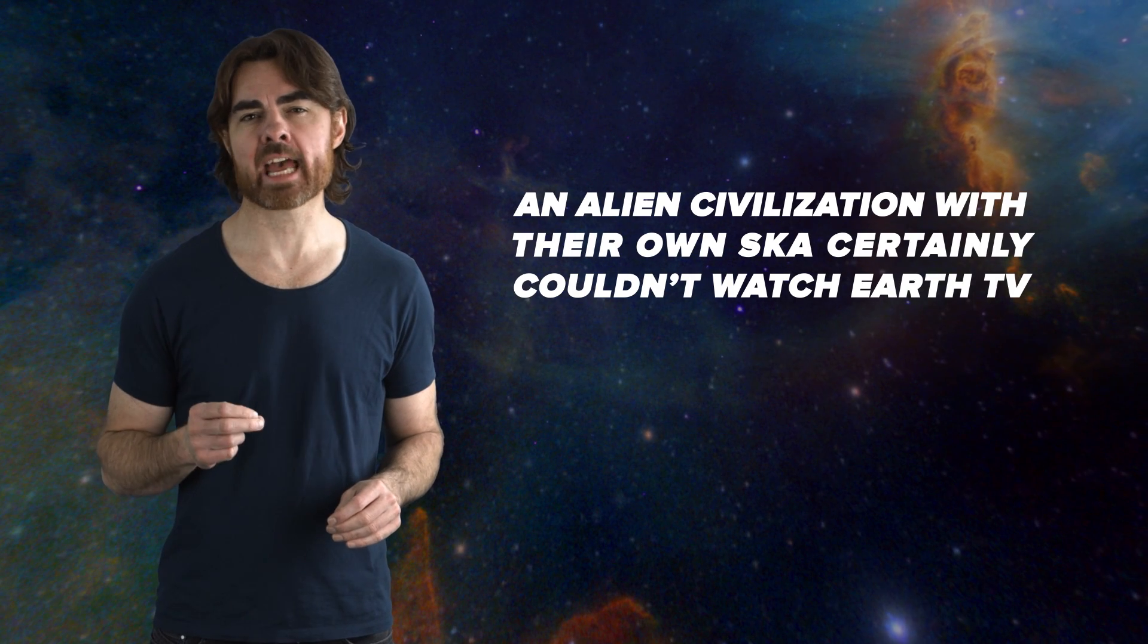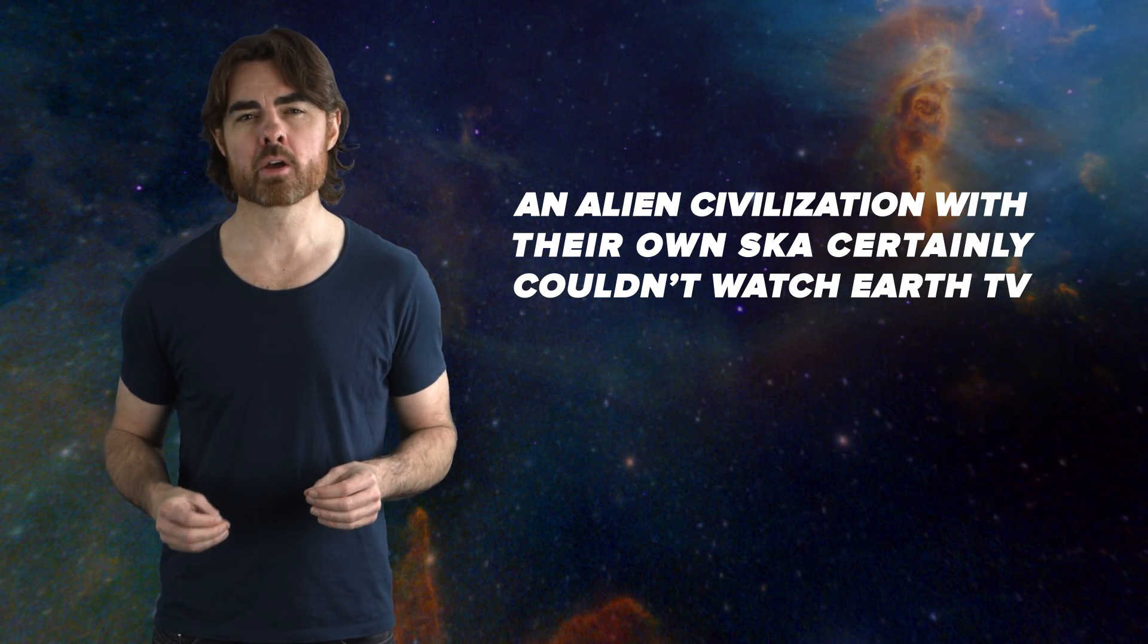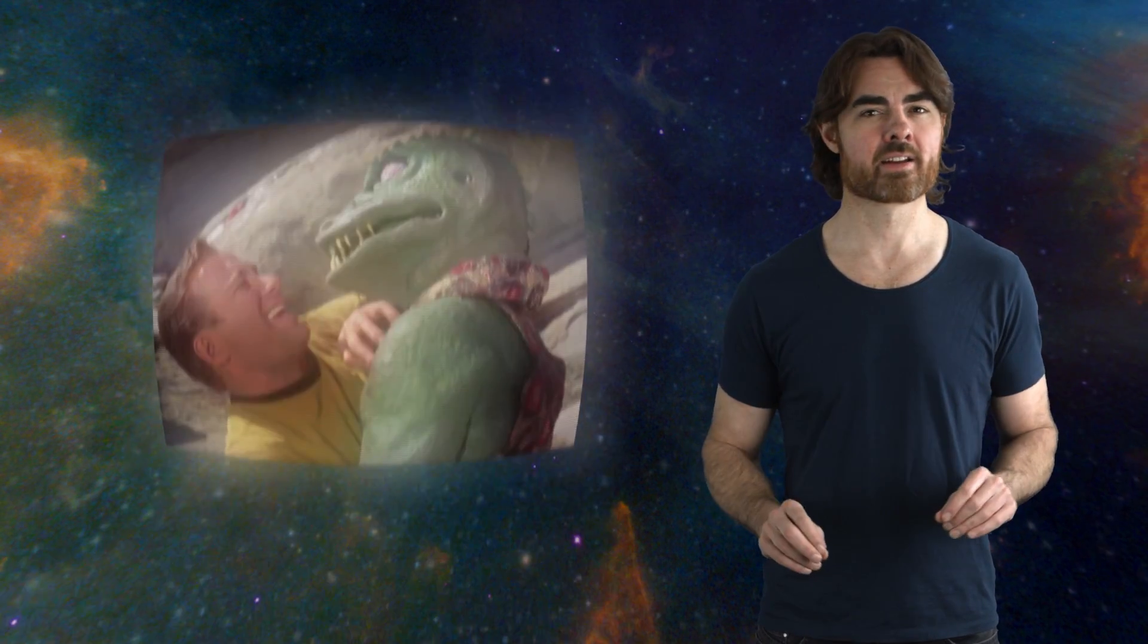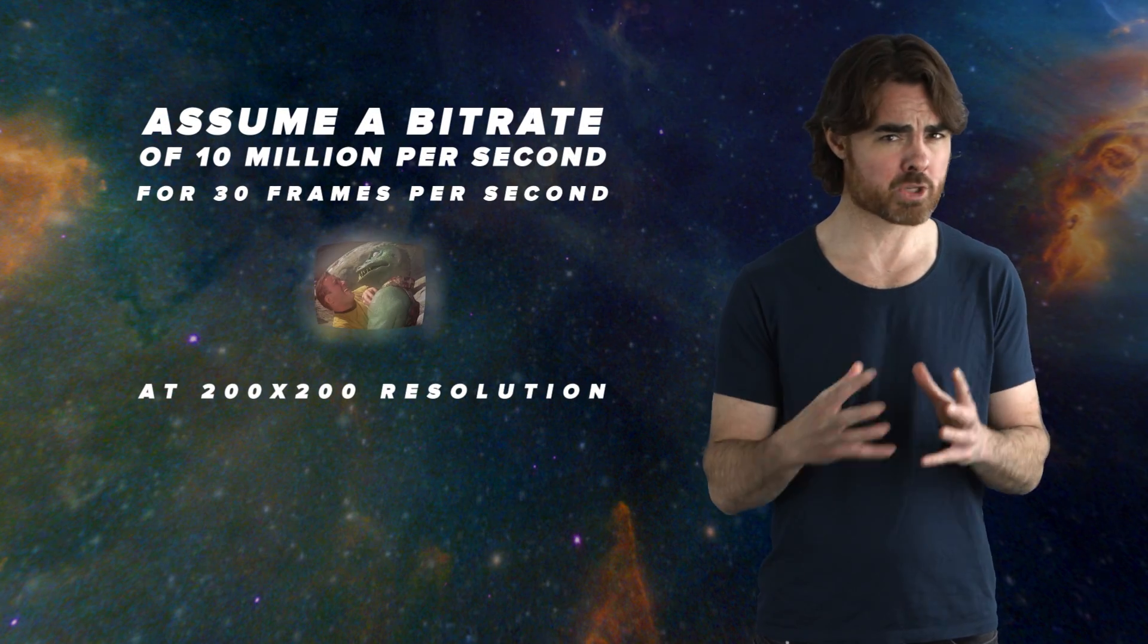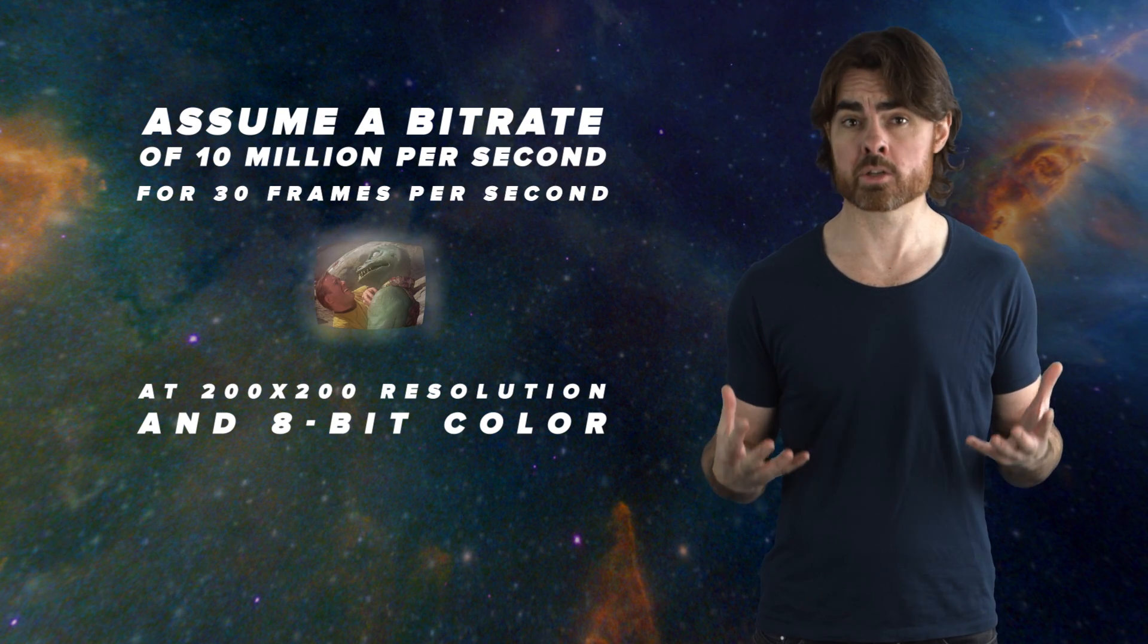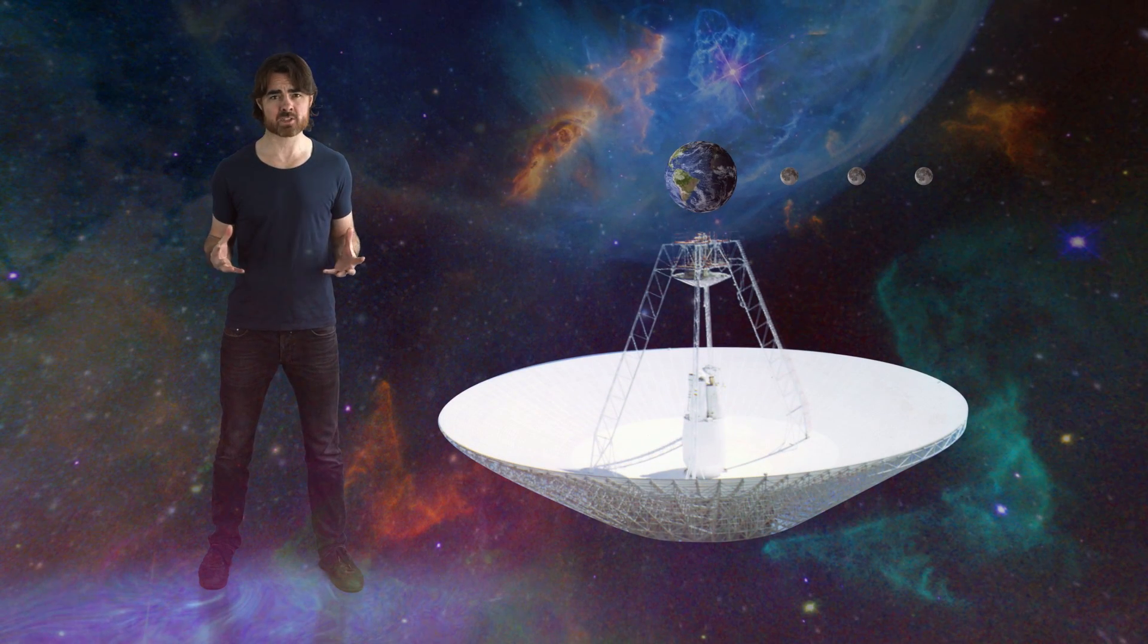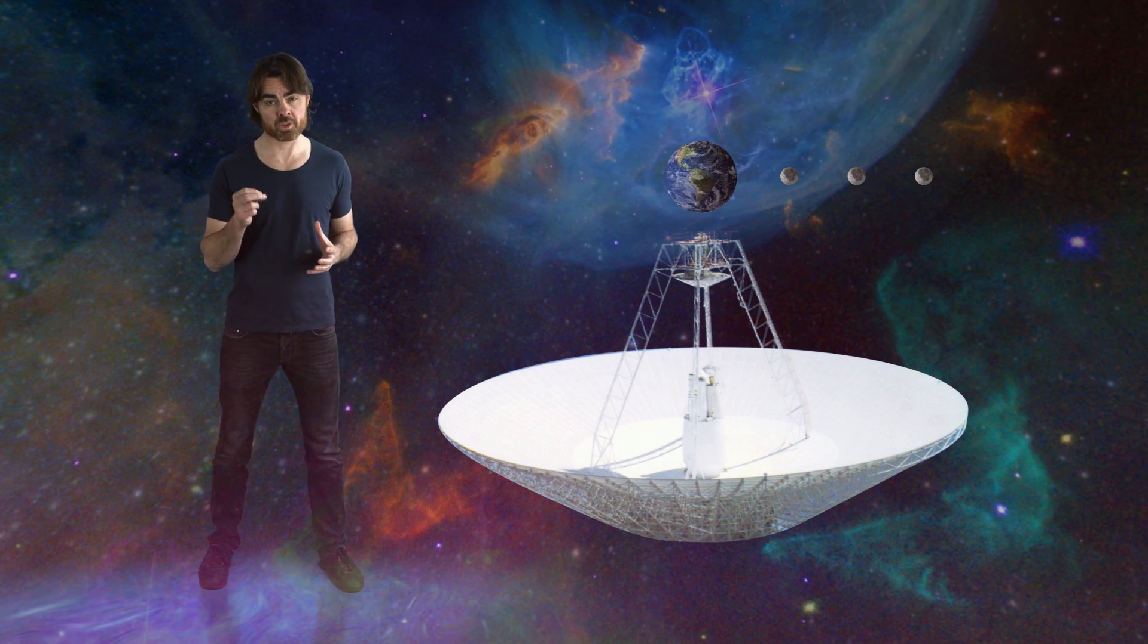To do that, they would need to achieve SKA's one month sensitivity in a tiny fraction of a second. That means compensating for the difference in exposure or integration time with sheer size of the telescope. Let's figure it out. What would be needed to say, tune in to the first season of the original Star Trek series? That signal is now 50 light years away. Assume a bit rate of 10 million per second for a miserable 30 frames per second at 200 by 200 resolution and only 8 bit color. Forget audio, which is a shame because the original series dialogue is awesome. The aliens would need a radio telescope trillions of times the SKA's surface area and equivalent to a dish around three times the radius of the moon's orbit. This is perhaps conceivable for a type 2 civilization, although it's exceedingly unlikely that there's one of those within our radio bubble.